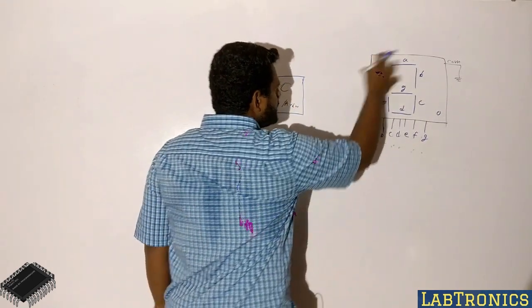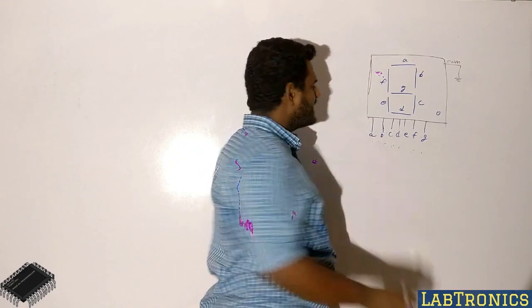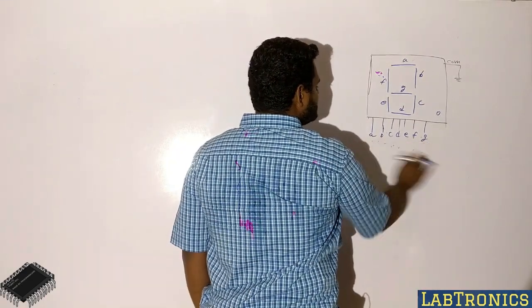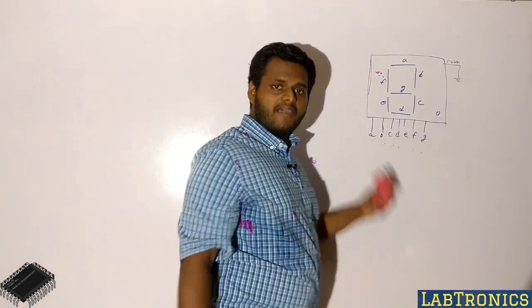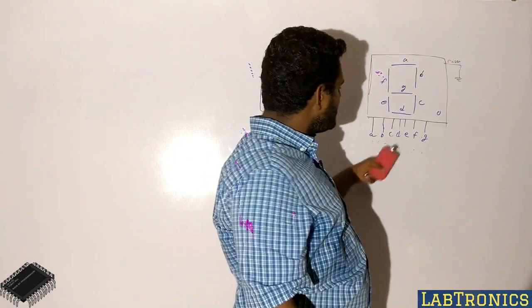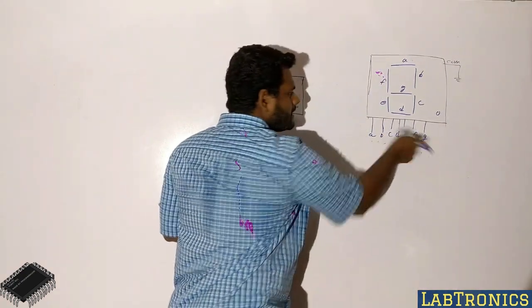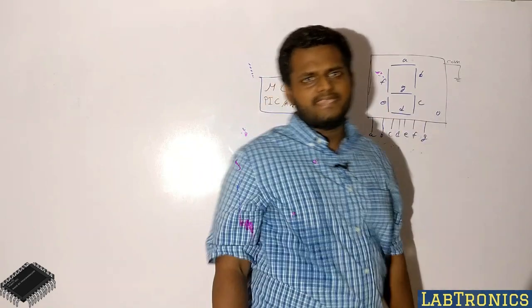As you can see, if you want to display a zero, you can use A, B, C, D, E, F. You can use Binary Coded Decimal, and you can use the display.